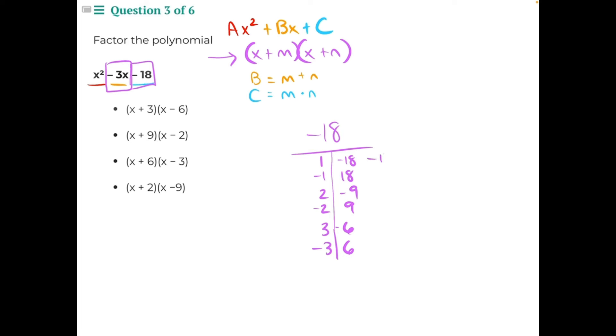1 and negative 18 would be negative 17, so it's not that one. This would be positive 17, so it's not that one. This would be negative 7 and positive 7, both incorrect.